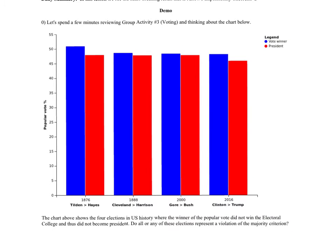This chart shows the four elections in U.S. history where the winner of the popular vote did not win the electoral college and thus did not become president. Do all or any of these elections represent a violation of the majority criterion? Remember, to violate the majority criterion, someone would have to get more than half the votes but lose the election.